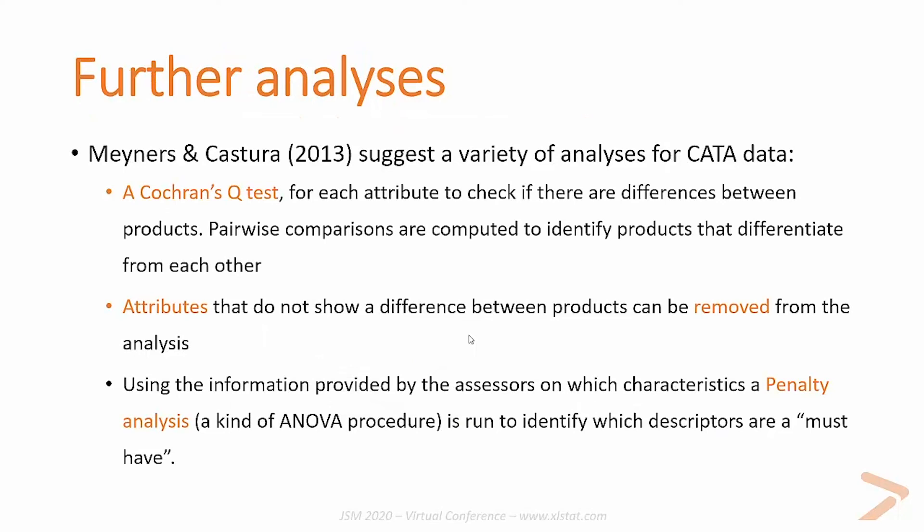Once you have evaluated the quality of your data, you can remove some assessors or attributes because they are redundant or because the assessors are too extreme. Once satisfied with data quality, you can move forward with further analyses on your CATA data. Meyners and Castura in 2013 suggested a variety of analyses for CATA data. The first step consists of a Cochrane's Q test to evaluate for each attribute whether there are differences between products. If differences are identified, pairwise comparisons can be computed to identify which products differentiate from each other. For attributes that do not show a difference, you should consider removing them.